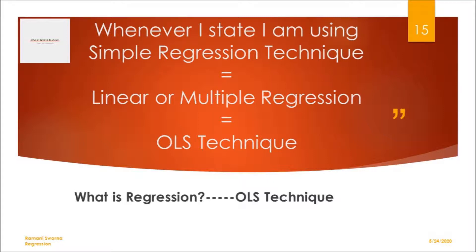So what have we seen here? We have proceeded further and come across the reduction in error, meaning I have to come to its lowest form. Whenever I state I'm using a simple regression technique, it means I am using one of these regression forms — either linear regression. If in your data set you have a set of independent variables rather than just one — it can be 2, 3, 4, or 5 — you enter into multiple regression. This is where we come in for the OLS technique.